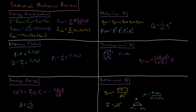The translational energy is given by the particle-in-a-box model system from quantum mechanics, where the energy is Planck's constant squared over 8 times mass times the length of the box squared, times 3 quantum numbers which represent the energy quantization in the x, y, and z directions.